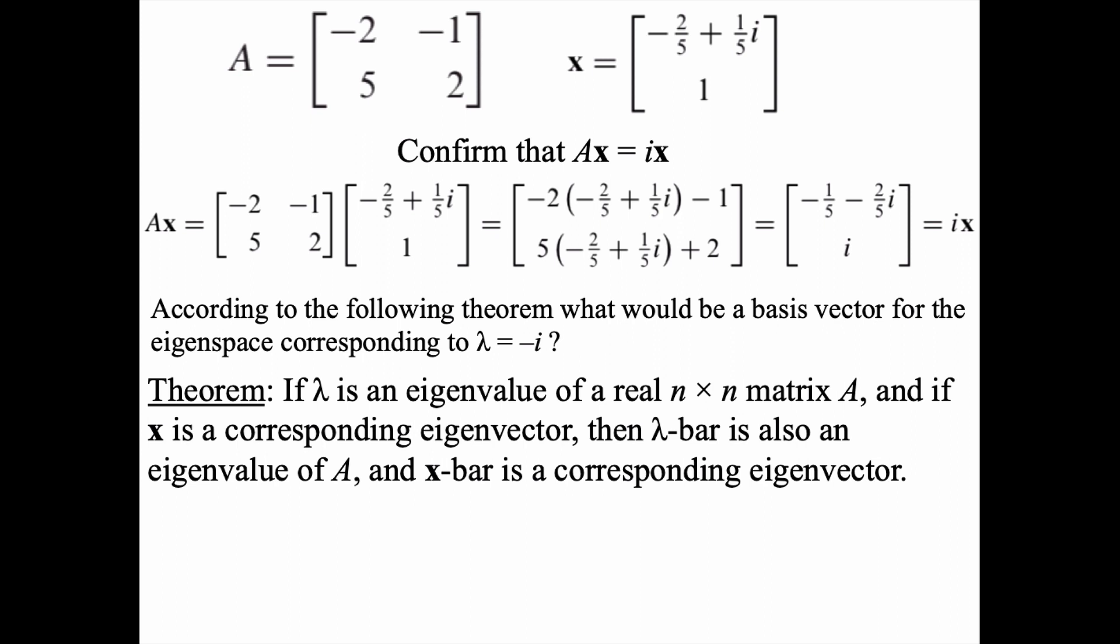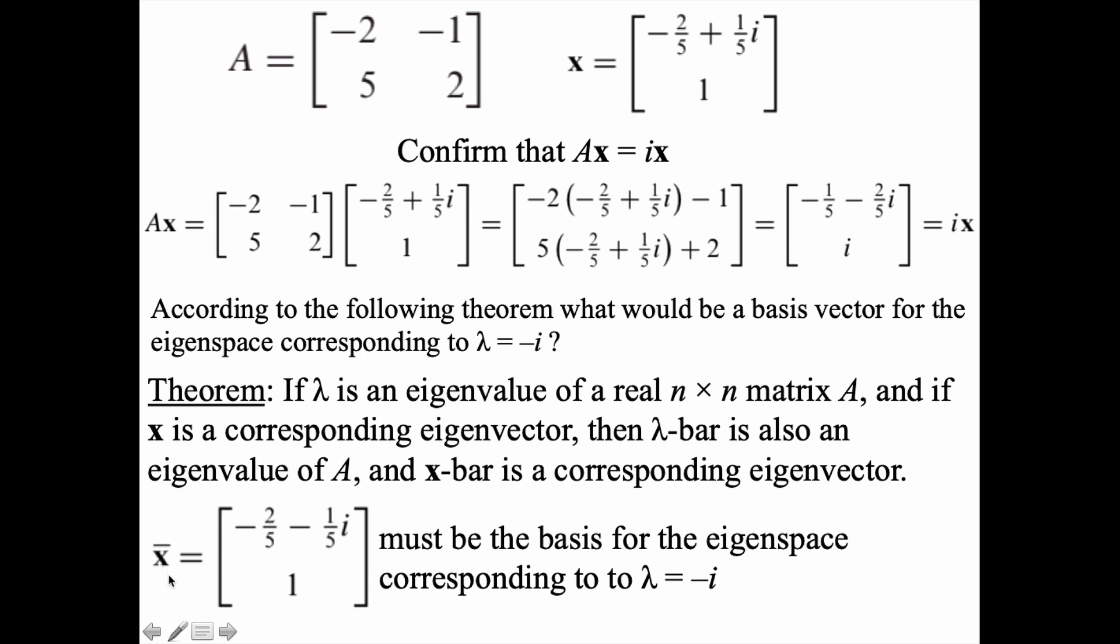According to the theorem we considered earlier, what would be the basis vector for the eigenspace corresponding to lambda equals negative i? Well, you recall that theorem said they occur in complex conjugates, so there's no need to do extra work. We would just declare x bar, the other eigenvector family, must be a basis for the eigenspace corresponding to lambda equals negative i.